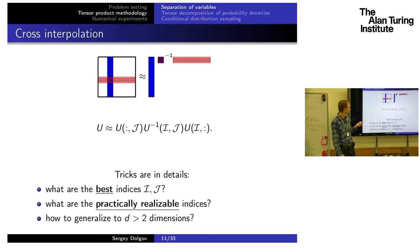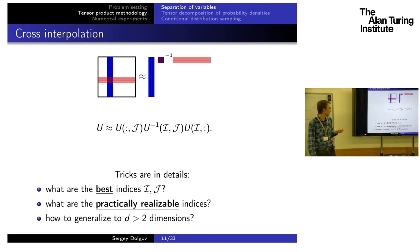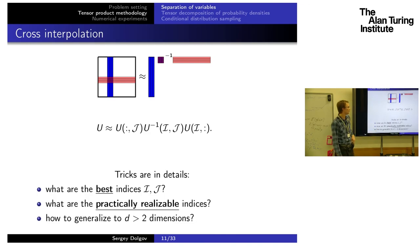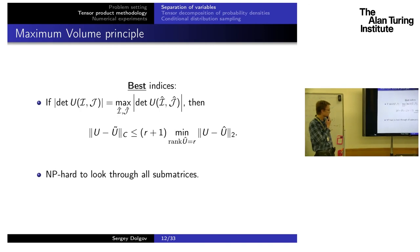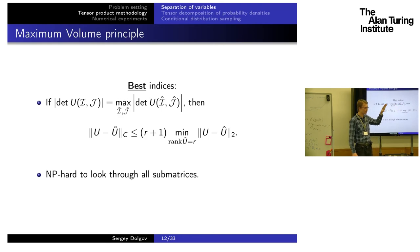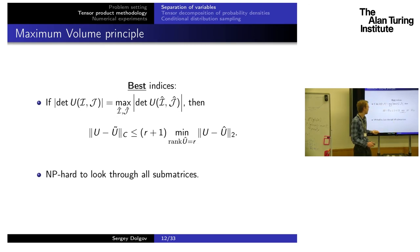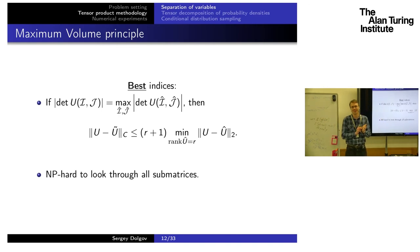Questions arise: what are the optimal index sets, and what values can we actually compute? The answer about the best indices is reasonably known — if you select them such that the submatrix on the intersection has maximum volume (the absolute value of the determinant), and if this submatrix has maximum volume among all r-by-r submatrices, then the approximation error is only worse than optimal by a factor proportional to the rank. The problem is that searching all r-by-r submatrices is exponentially hard, so we need a different approach.